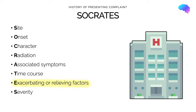Exacerbating or relieving factors involves asking the patient if anything makes the symptom worse or better. This is quite important in a respiratory history — for example, a patient with asthma may have symptoms worsened by their occupation or work environment. Finally, severity involves asking the patient to grade the symptom on a scale of 0 to 10, most commonly used for pain but applicable to other symptoms too.